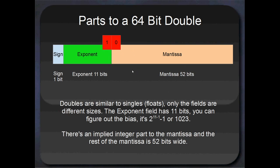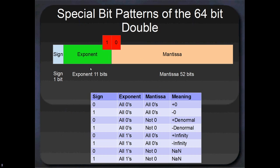So the 64-bit double is pretty similar to the 32-bit single, or float. There's three different parts, or sort of four different parts - there's an implied part here. We've got the sign bit, then we've got an exponent, and we've got the mantissa. The exponent field this time has 11 bits, and you can figure out the bias: that's going to be 2 to the power of 11 minus 1, minus 1, which gives us 1023 as our bias. The implied integer part is exactly the same as the implied integer part to a single. But the mantissa is 52 bits wide, so 64-bit doubles can represent much larger and much smaller numbers, with more accuracy.